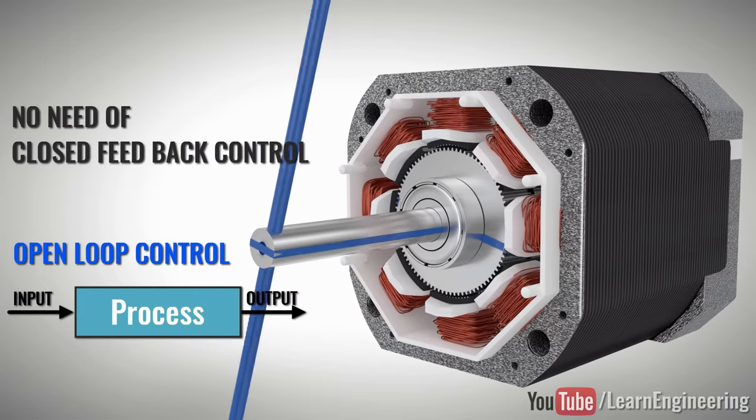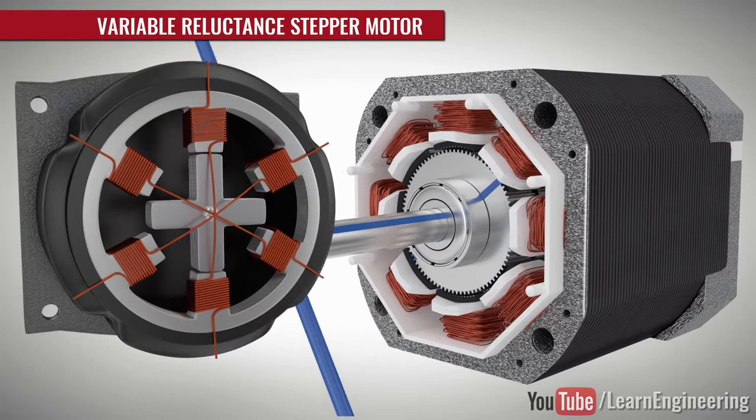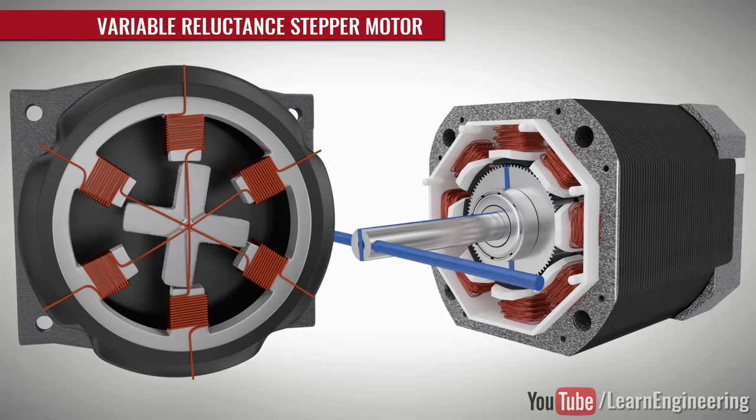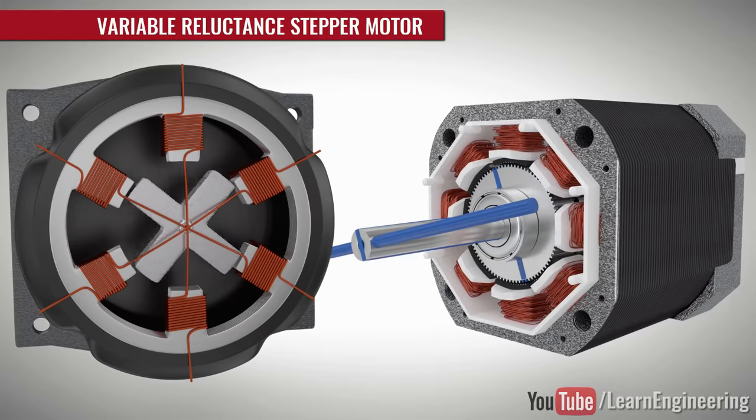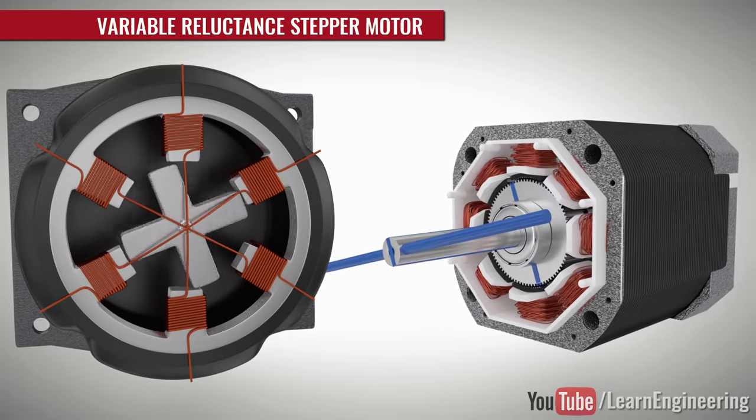Let's first understand how the variable reluctance type of stepper motor works, which is the simplest one. Later on, we will move to a highly accurate and commonly used motor type.